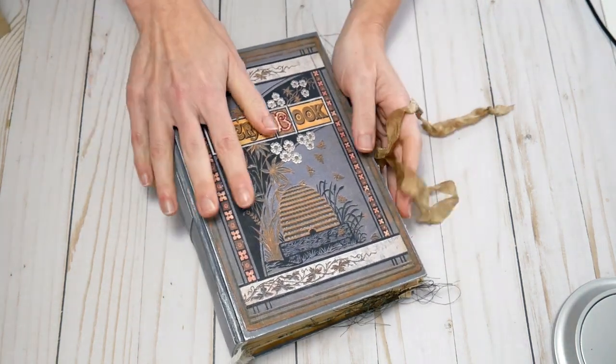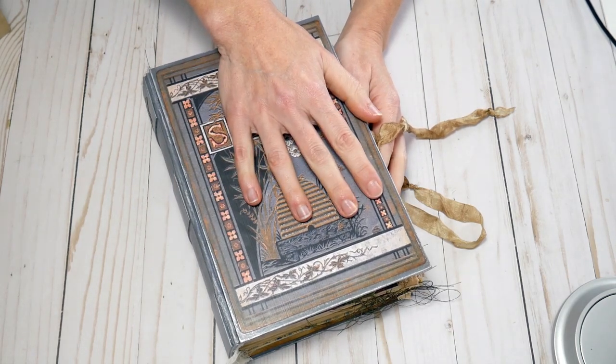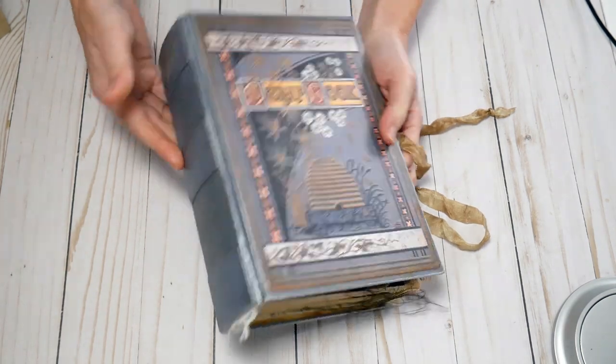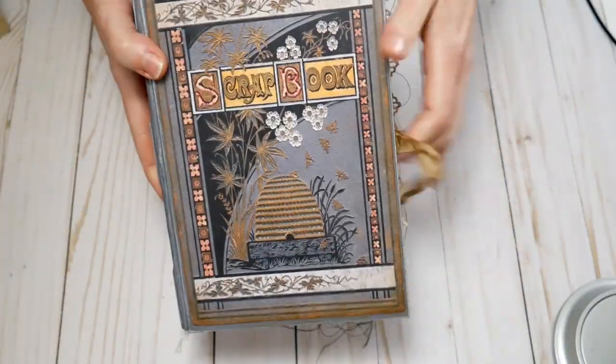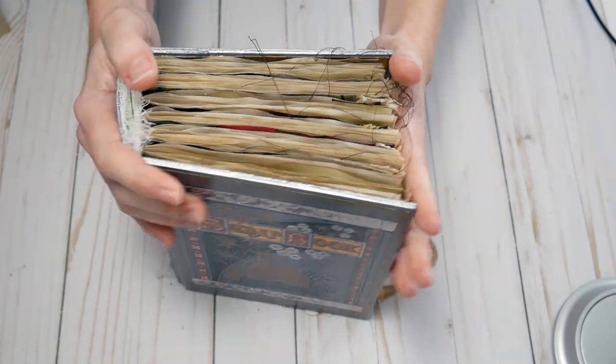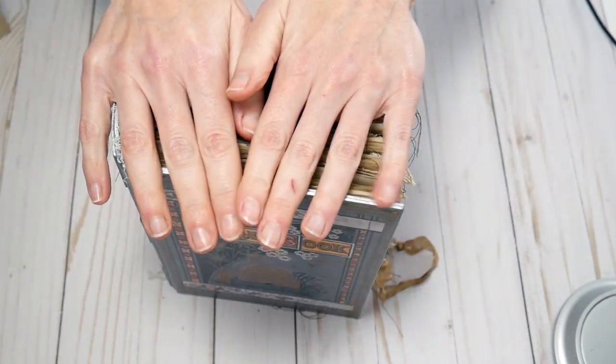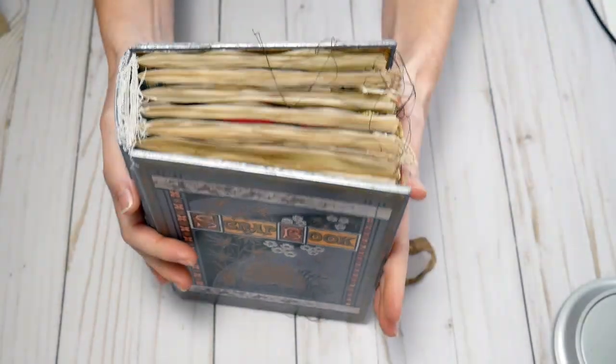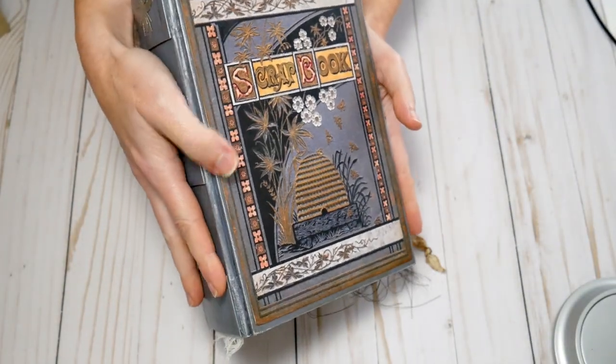You guys might remember this book cover. This is the book I made in the 1902 Philadelphia course on teachable. This is that book and I bound it with that new hollow back binding tutorial.